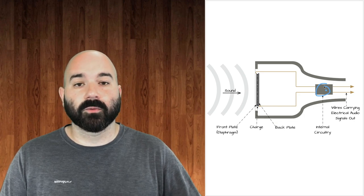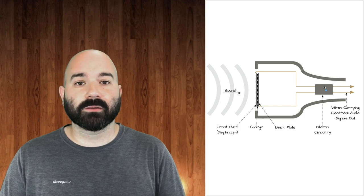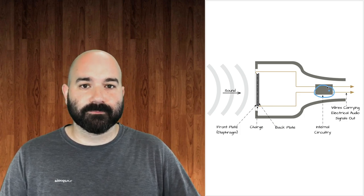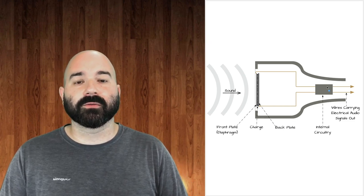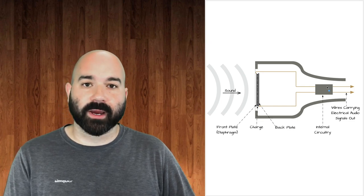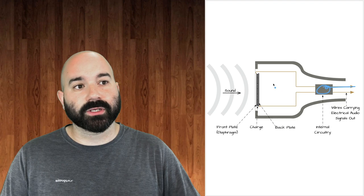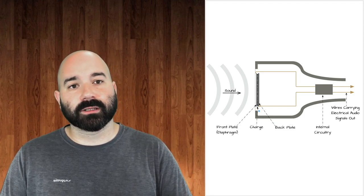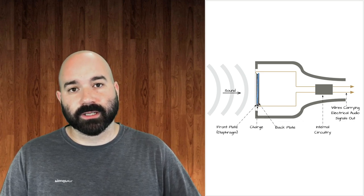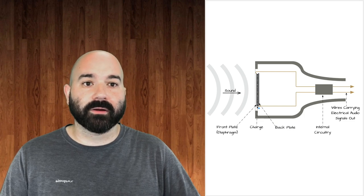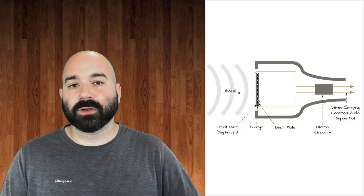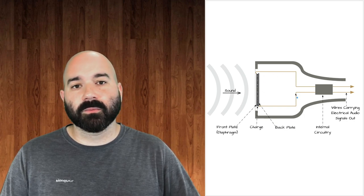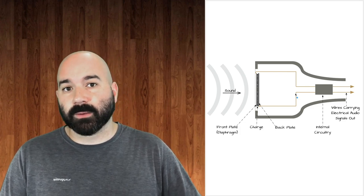Another disadvantage is that condenser microphones require phantom power—48 volts of electricity riding on the signal path to power the internal circuitry and sometimes even the static charge. In electret condenser microphones, the capacitor holds a static charge permanently and does not require phantom power. But most condenser microphones will require phantom power. They can also be affected by environmental conditions and are more prone to moisture damage than dynamic microphones—so if you're outside with a chance of rain, bring your dynamic microphones rather than your more expensive condensers.